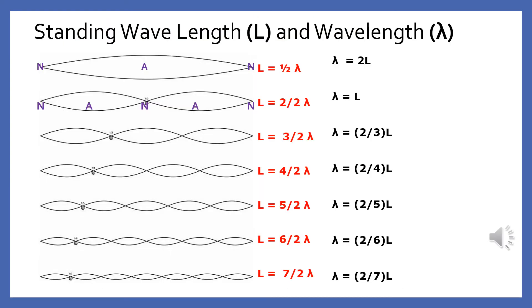Here are seven standing waves moving through a string with a length L. The top string is produced when the source vibrates at the fundamental frequency. Each successive standing wave is produced by a source that is a whole number multiple of the fundamental frequency. If the fundamental frequency is 10 Hz, a standing wave can only be produced with a source vibrating at 20, 30, 40, 50, 60, or 70 Hz in this particular length.